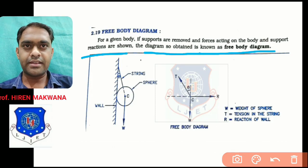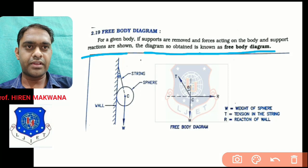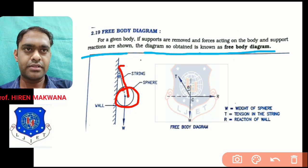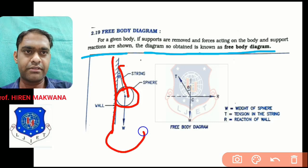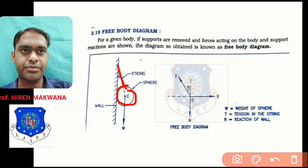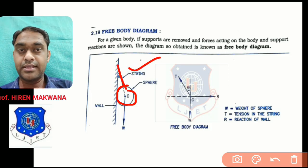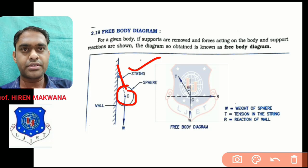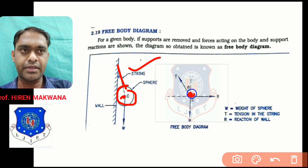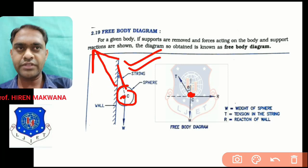Let us see the figure. One sphere is given, connected with the help of a string at the wall. This is the vertical wall. The weight of the sphere acts vertically downward from the center. This sphere is connected with a string, so there is tension — a tensile force acting upward. This is the center of the sphere, point C. Tension acts along the string towards the fixed point always.